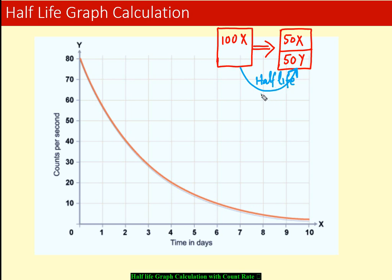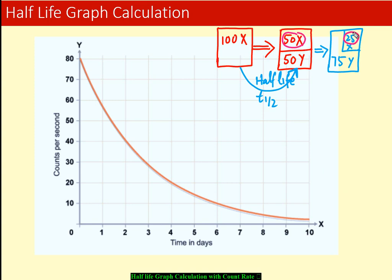After the second half-life we will have only 25 atoms of X and 75 atoms of Y. So again, 50 becomes 25 — the time taken for this is also called one half-life. This is the basic idea of half-life.